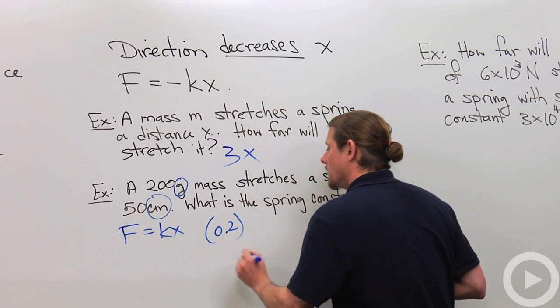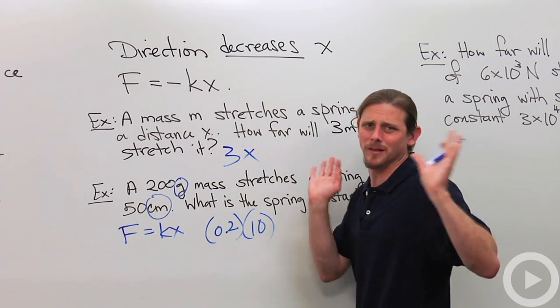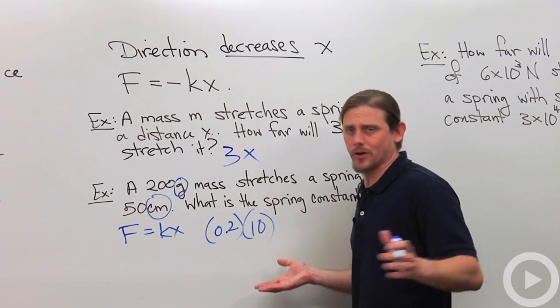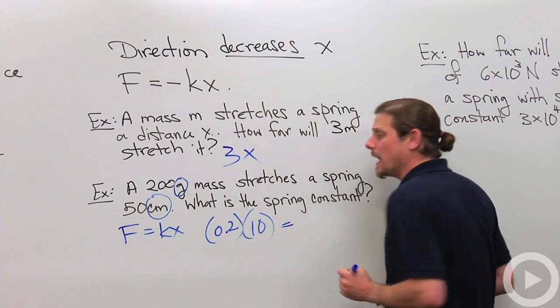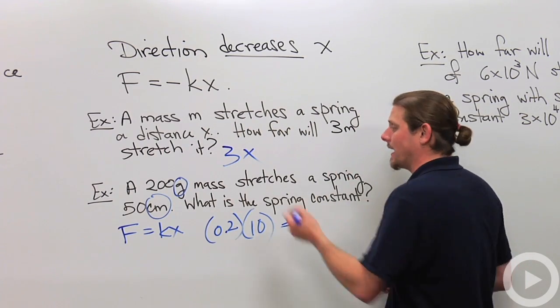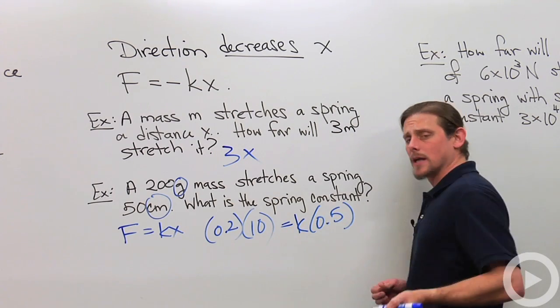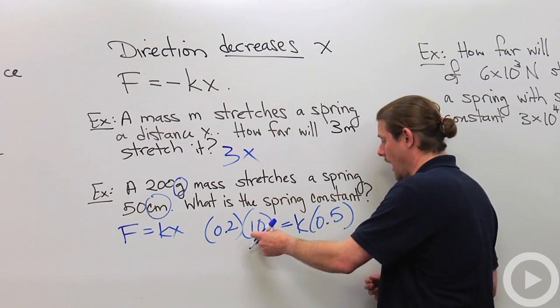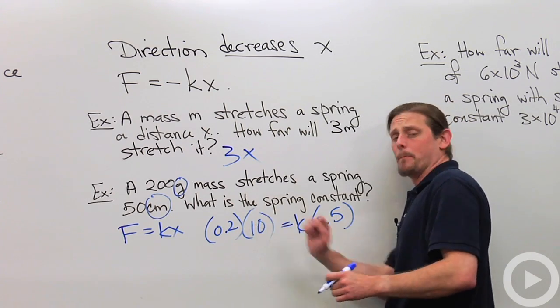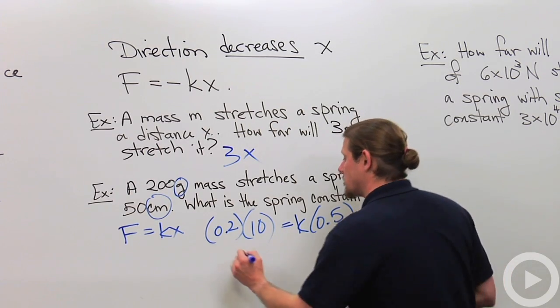So we'll have M, 0.2, times G, I'm just going to use 10. It's 9.8, but whatever. You're going to use a calculator, use 9.8. I'm not going to, so 10. Equals, and then I've got K, and then X. Just like that. Now, 0.2 times 10 is 2. 2 divided by 0.5. Dividing by 0.5 is like multiplying by 2. 2 times 2 is 4.